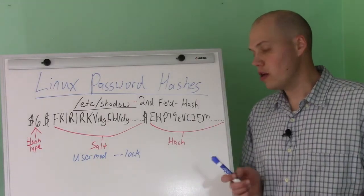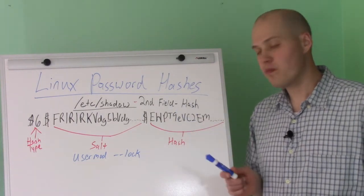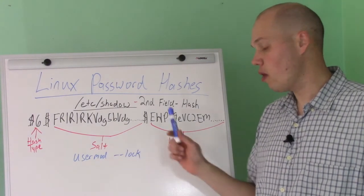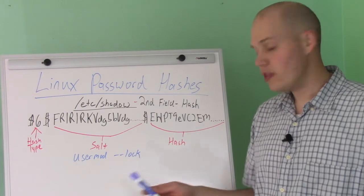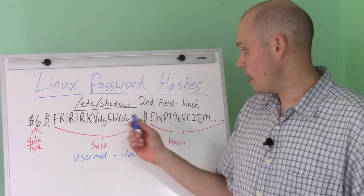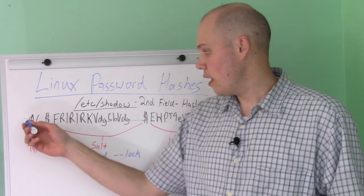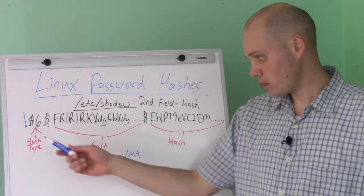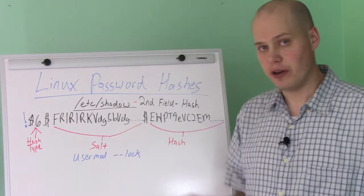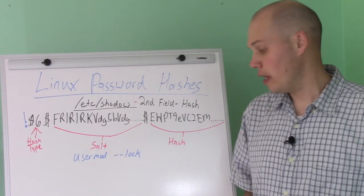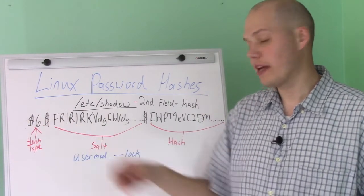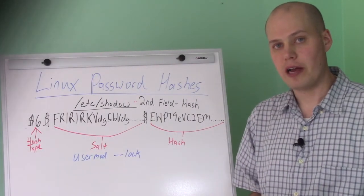One other thing you might notice with the second field in /etc/shadow is that when you run a usermod lock command to lock a user, all this command does is edit /etc/shadow — specifically the second field for that user — and add an exclamation point in front of the password hash, which renders the whole hash unusable and prevents the user from logging in. If you run usermod unlock, all it does is go in and delete that exclamation point, and the user has a valid password again. That's all usermod lock is doing in the background.